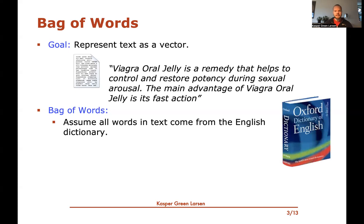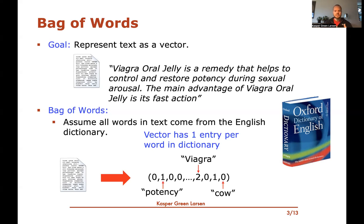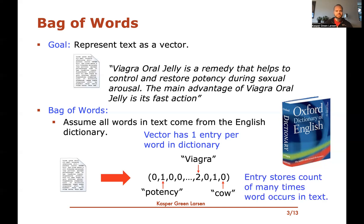With bag of words, the basic idea was that we assume all words in the text come from the English dictionary, and then we create a vector with a count — an entry or coordinate — for every word in the dictionary. We just count how many times each word occurs in the text. For instance, 'agra' occurs twice, 'potency' occurs once, 'cow' occurs zero times, and so forth. So every coordinate corresponds to a word in the dictionary — we're just storing the number of times it occurs.